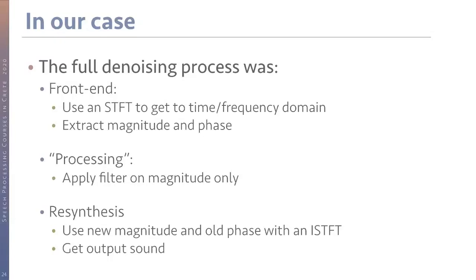What we call a filter bank in signal processing is actually a convolutional neural network — you're convolving with a bunch of filters in both cases. The subsampling process in filter banks corresponds to pooling or striding in the neural network world. The middle processing step can be replaced by a neural network — just as we replaced spectral subtraction with simple layers. And upsampling can be done by undoing max-pooling or striding, with an inverse filter bank at the end. So each step translates one-to-one into a neural net term.